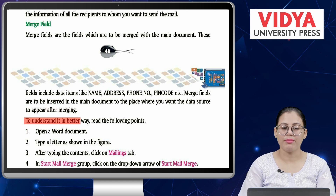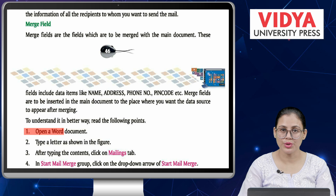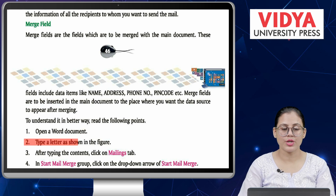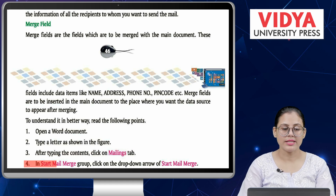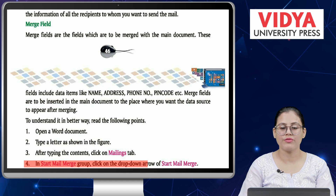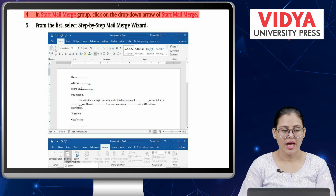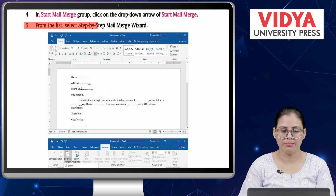To understand it in a better way, follow these steps. Number one, open a Word document. Number two, type a letter as shown in the figure. Number three, after typing the contents, click on the Mailings tab. Number four, in the Start Mail Merge group, click on the drop-down arrow of Start Mail Merge. Number five, from the list, select Step by Step Mail Merge Wizard.